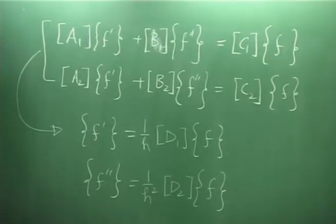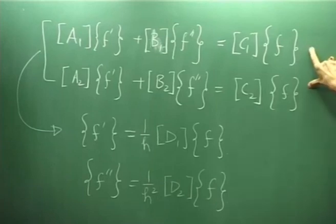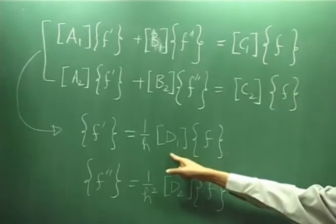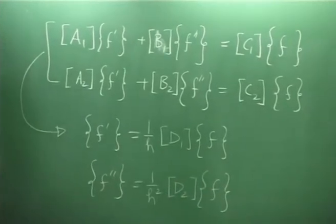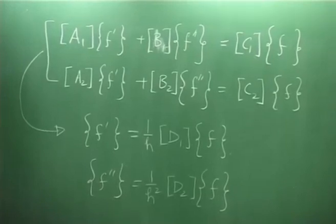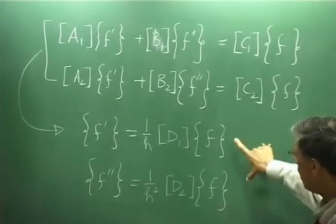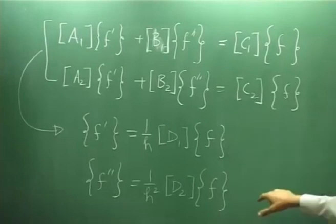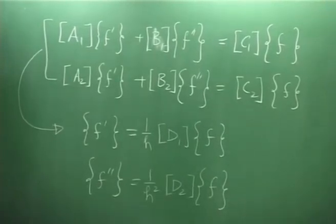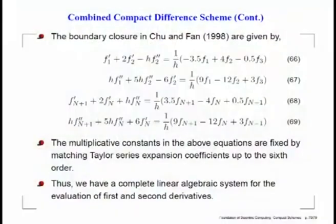For the analysis purpose, we have written it in this form, which could be reduced to another form. I had given you the expression for d1 and d2 in the last block. We could obtain an equivalent explicit expression for the first and second derivatives simultaneously. One thing to note is that these coefficients are fixed by Taylor series expansion, matching coefficients up to the 6th derivative, which gives us equations 66 to 69.